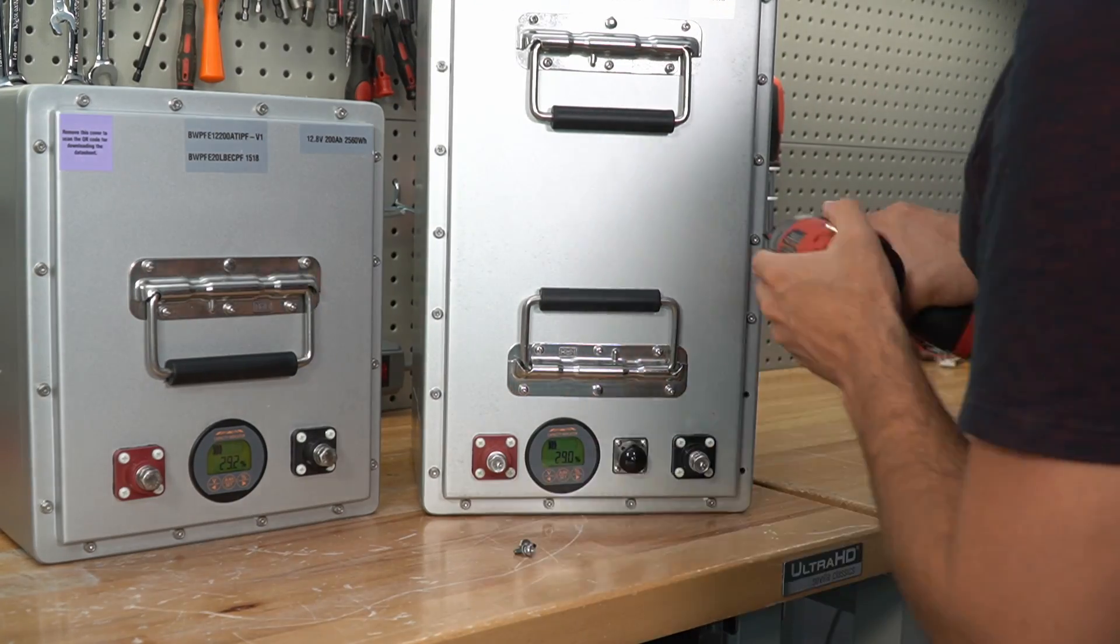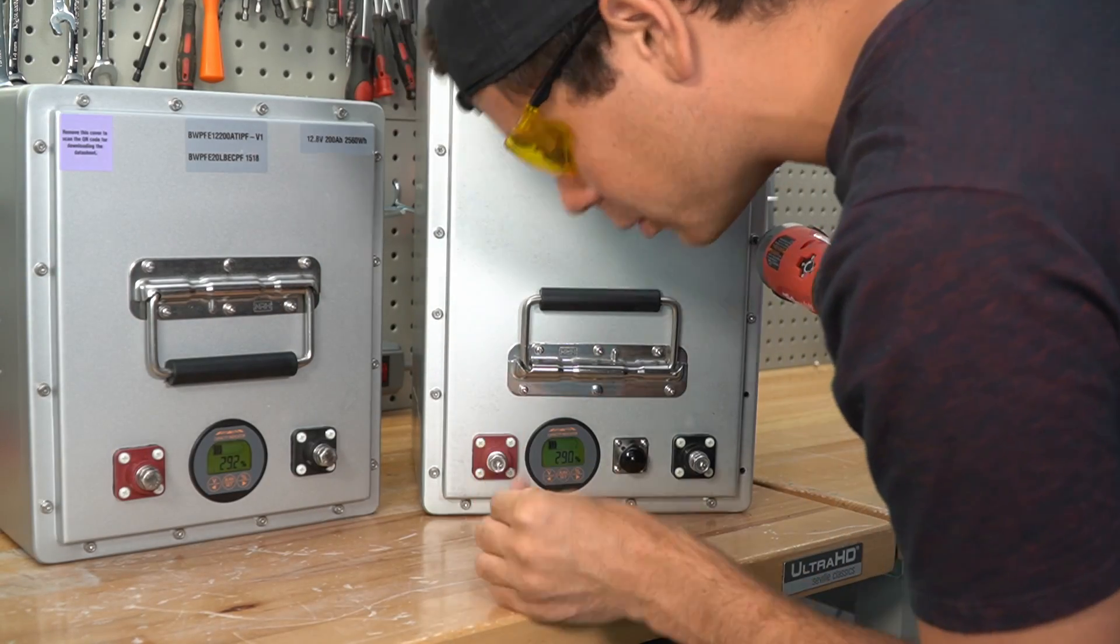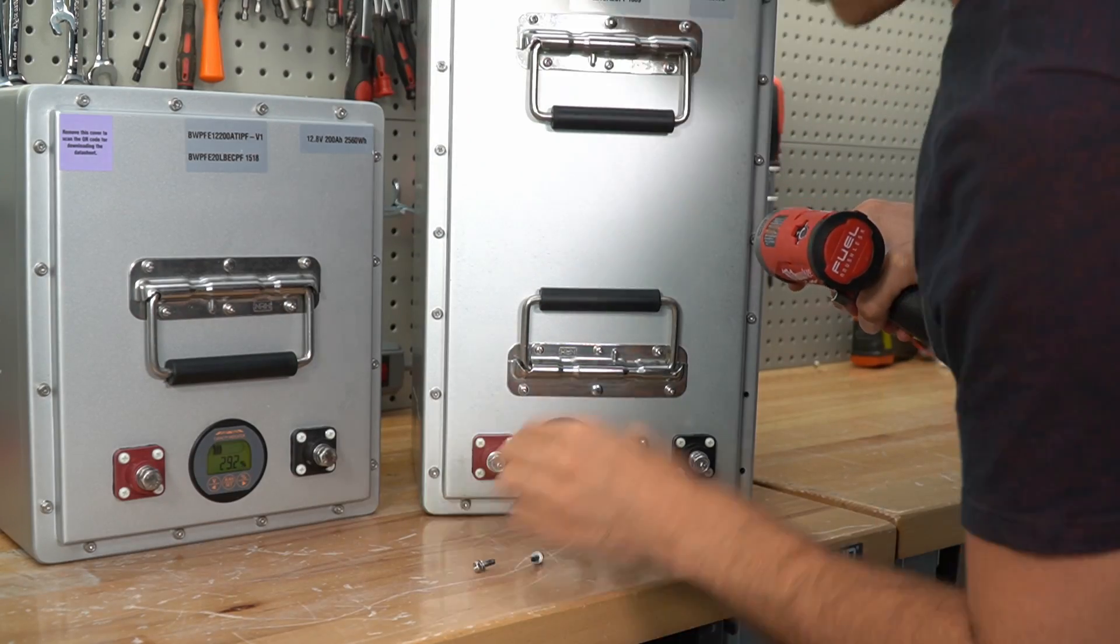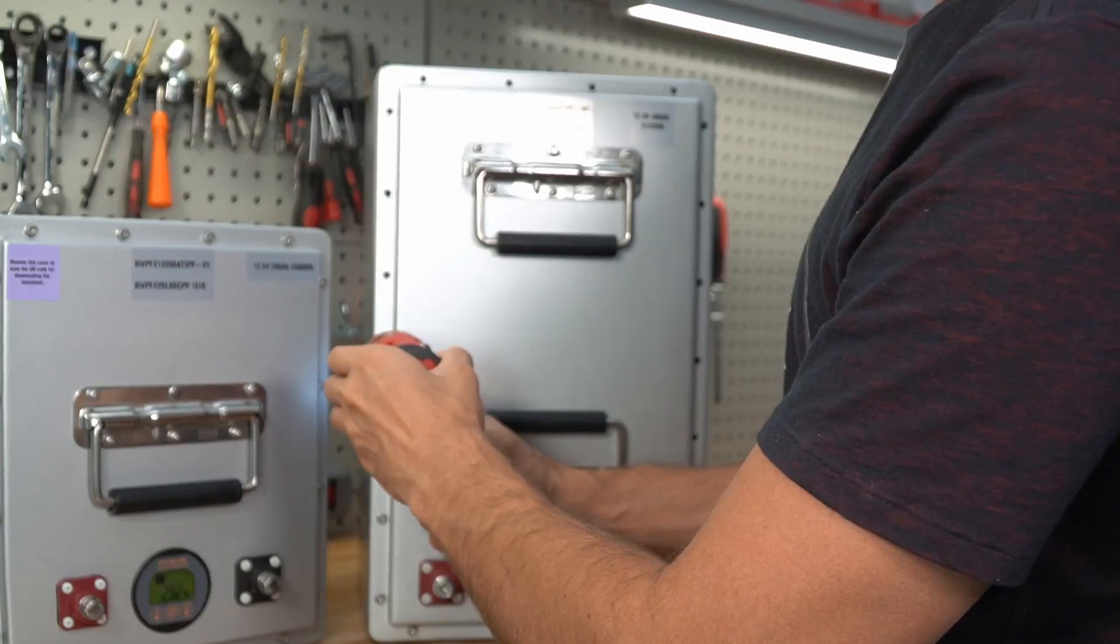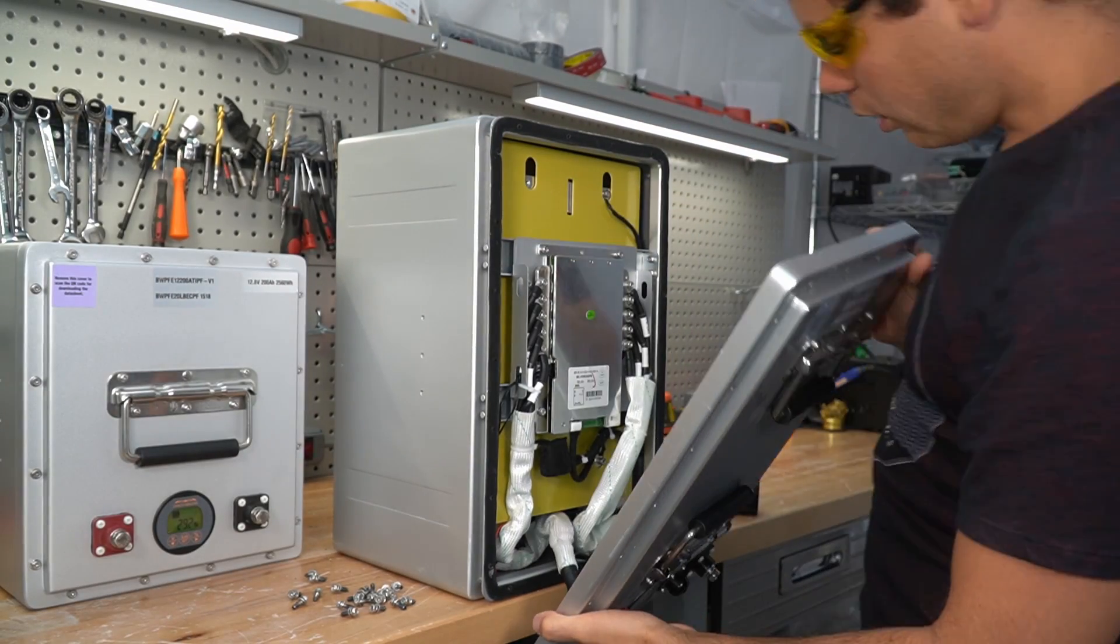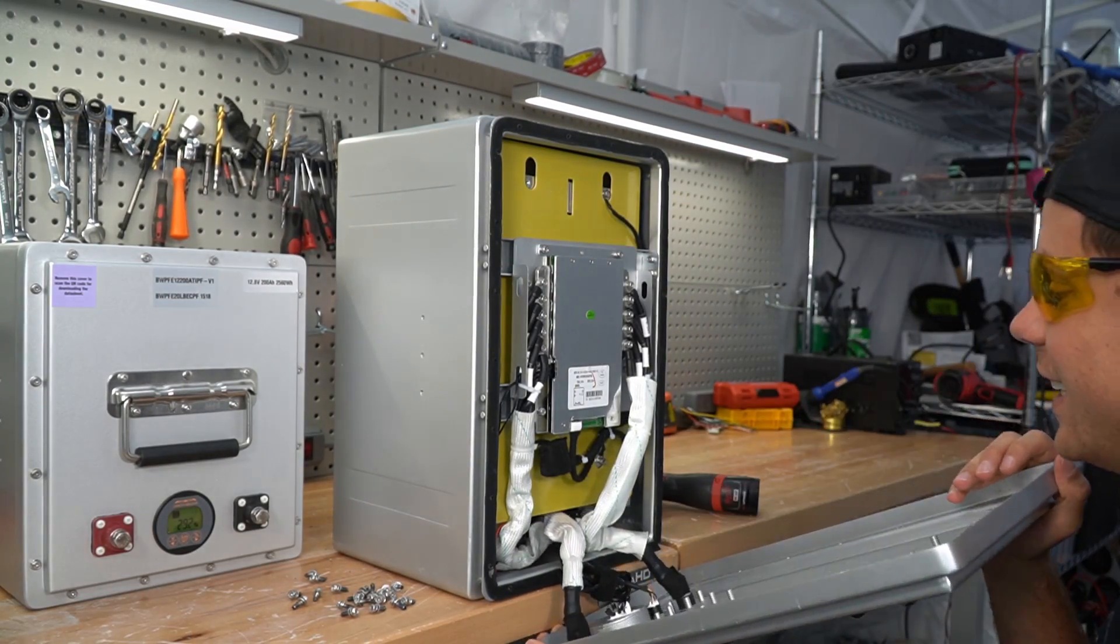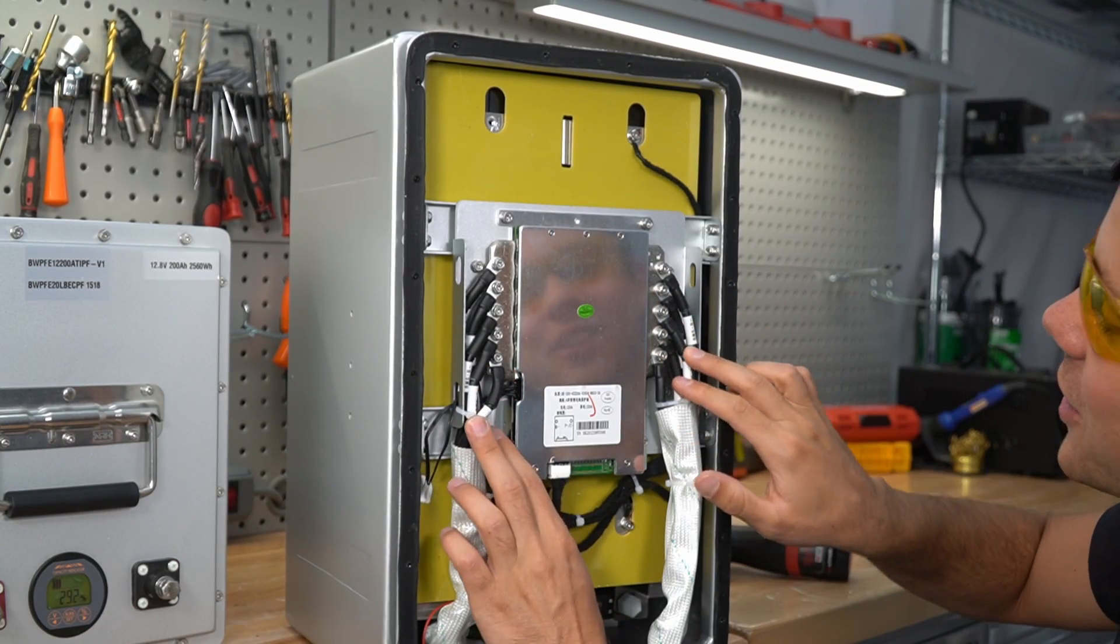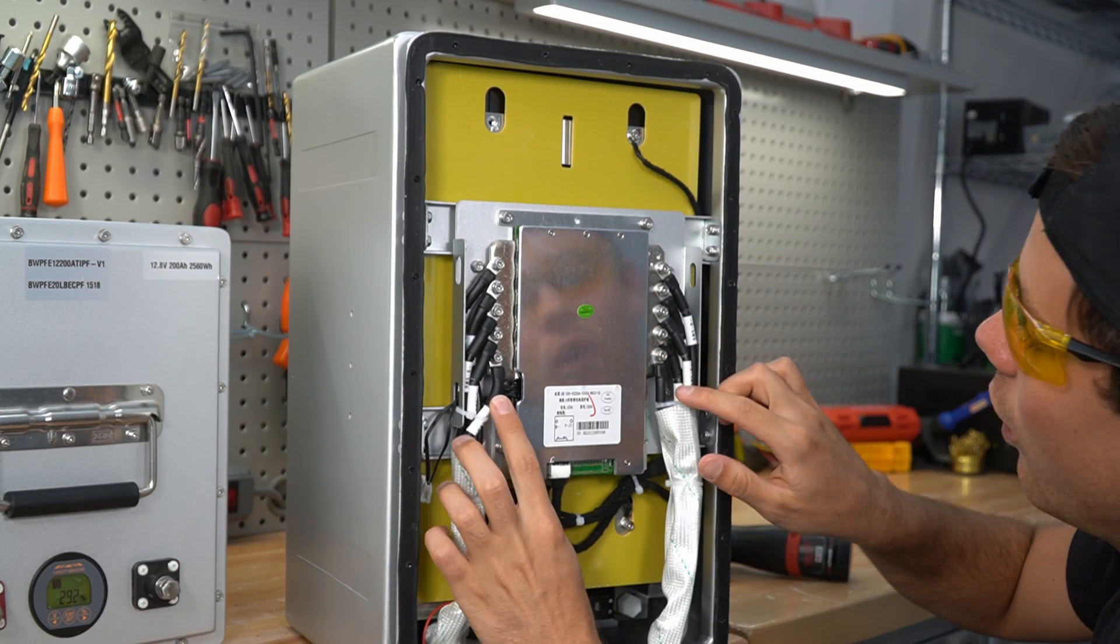These are nice screws. Oh, they have Loctite on them too. And lock nut washers, that's nice. This is nice. Holy cow guys, I was not expecting it to look like this. Look at all of these conductors and the heat shrink on each one. The build quality is much nicer than I anticipated.